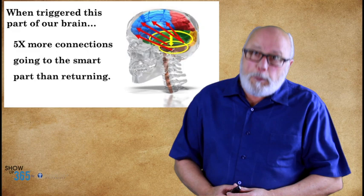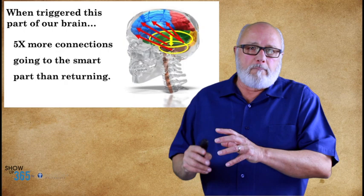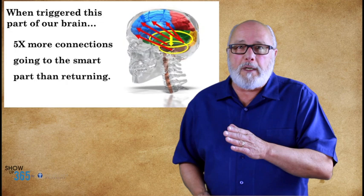Here's the real kicker: there are five times more connections going to the smart part from the not very smart part than for every one connection going back from the smart part of the brain to the very student part of the brain. So the smart part is really outnumbered in its attempt to manage the lower mammalian and reptilian brain.